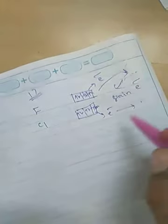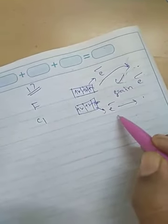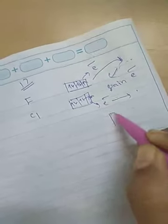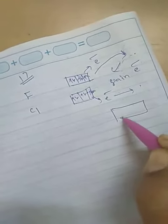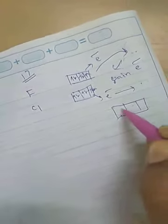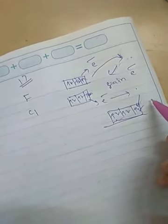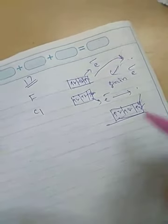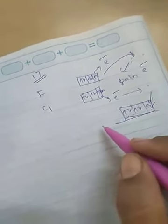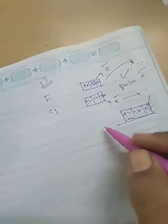So for group 17, they easily gain the electron and attain the next stable noble gas configuration. In 2p, there are 5 electrons; adding 1 more makes 6 — they attain the noble gas configuration easily and release energy.